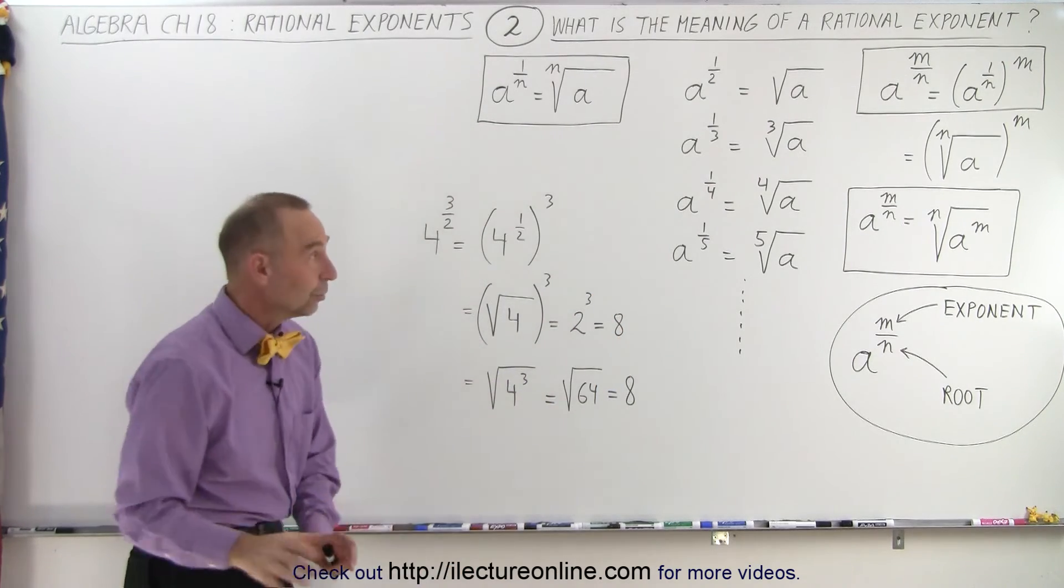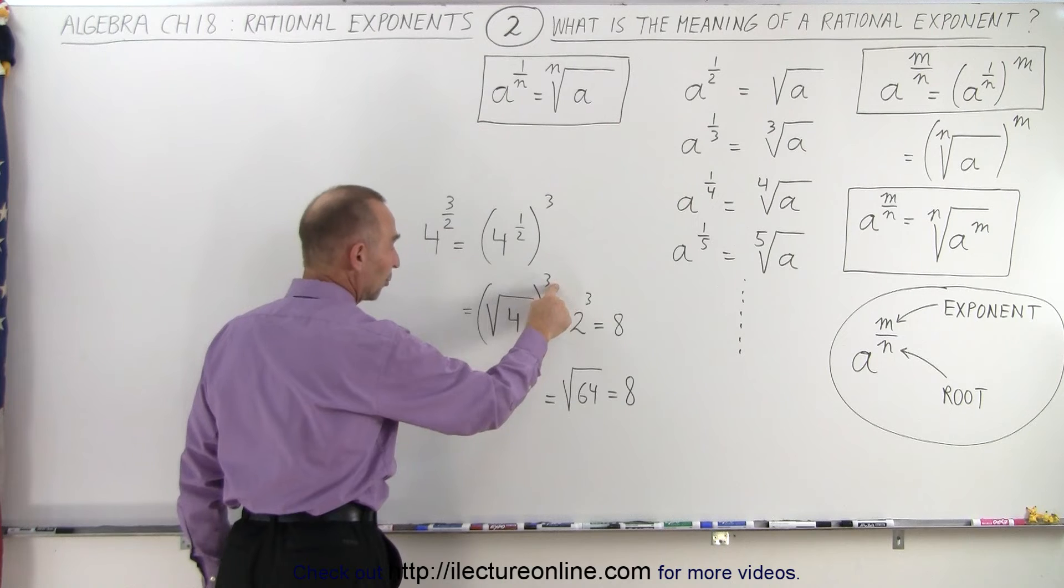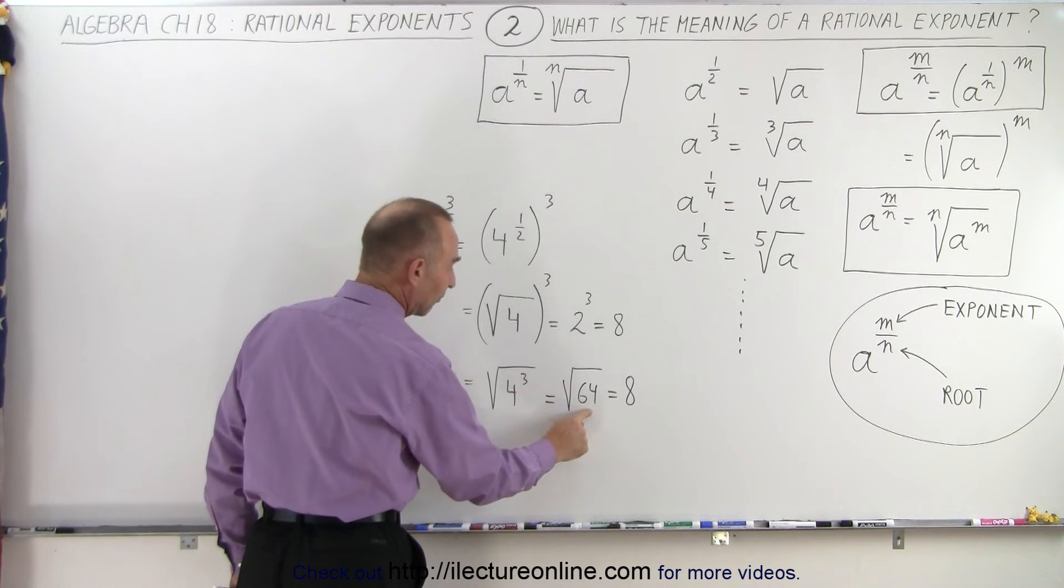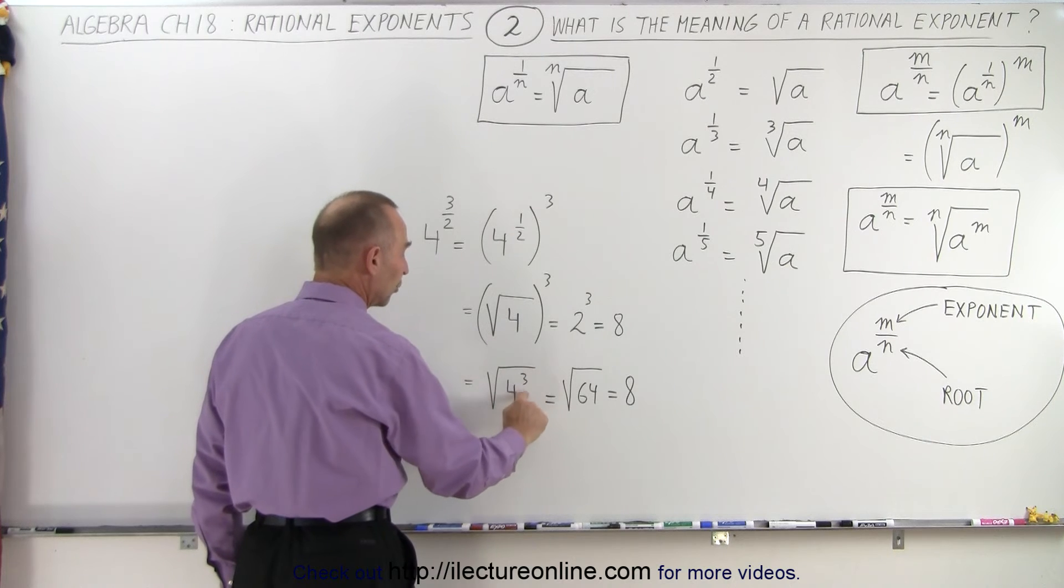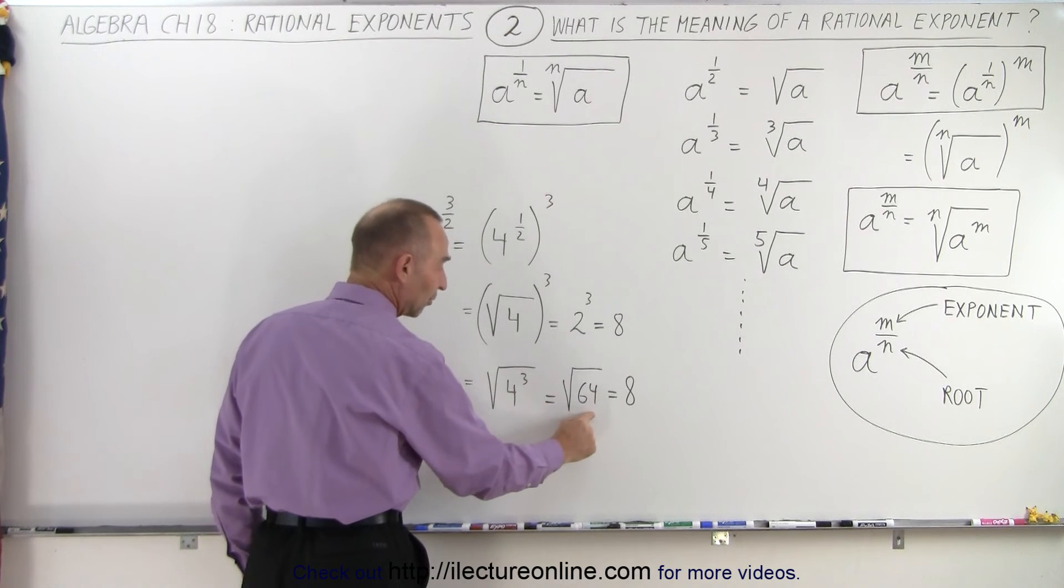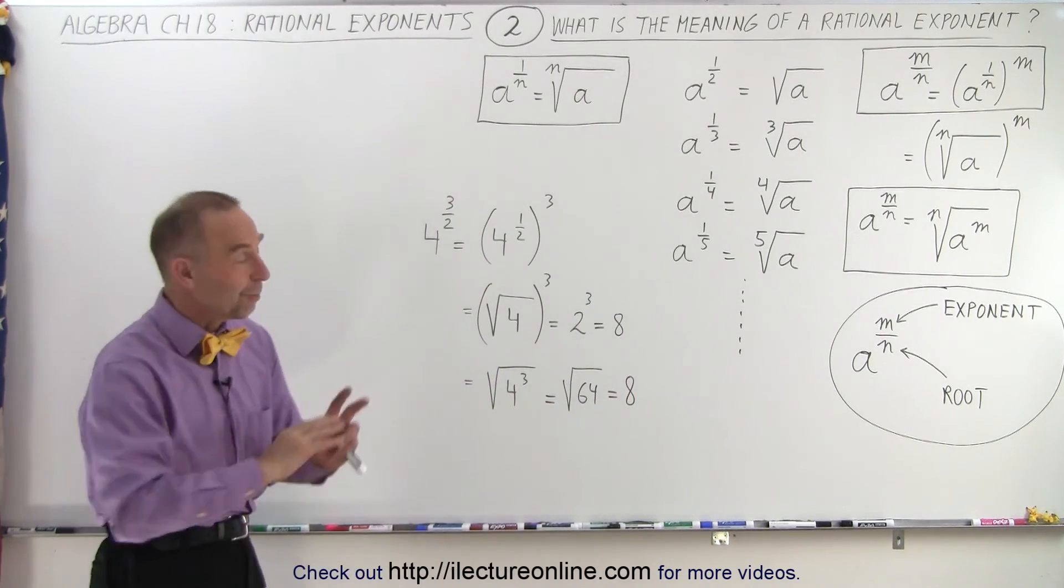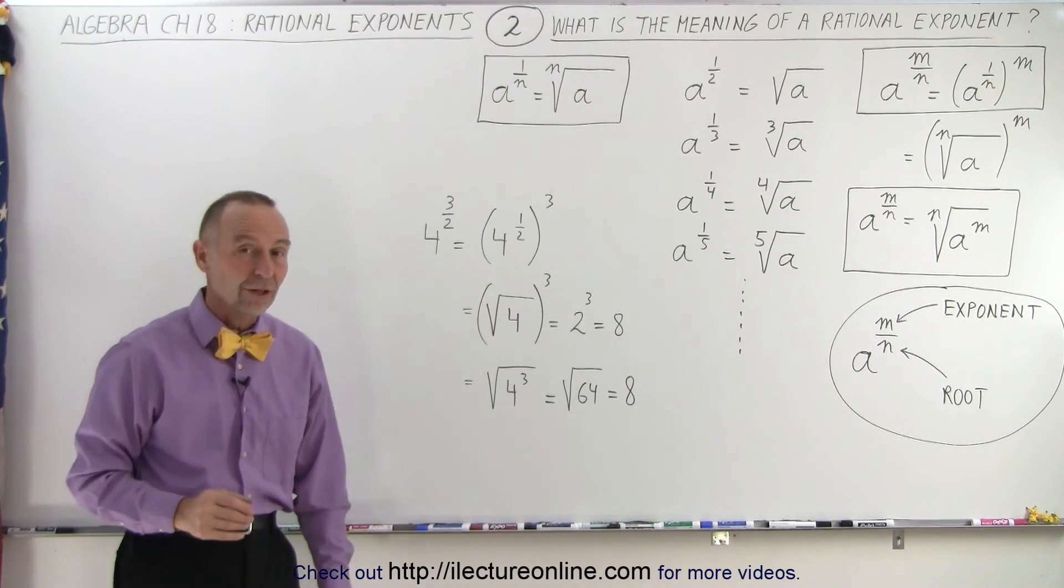Or we can do what we did over there. We can take the exponent 3 and move it inside the radical. 4 to the third power equals 64. And the square root of 4 to the third power equals the square root of 64. And the square root of 64 is equal to 8. We should get the same result no matter how we get to the final result.